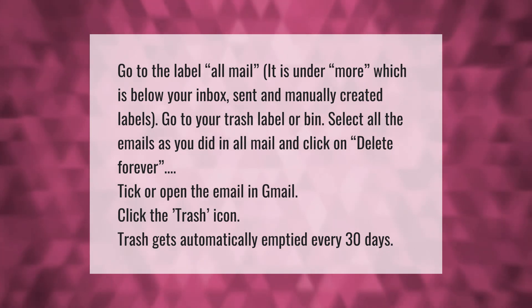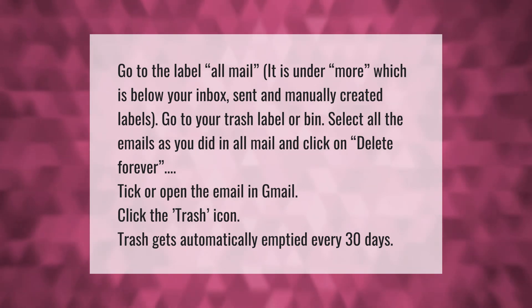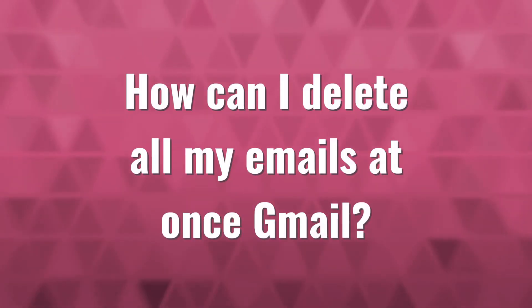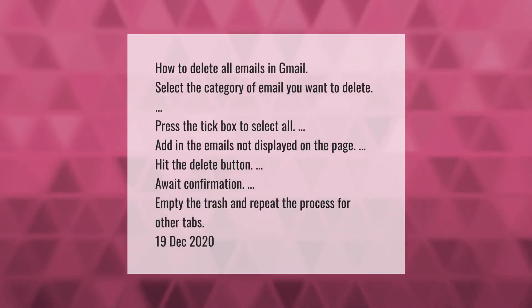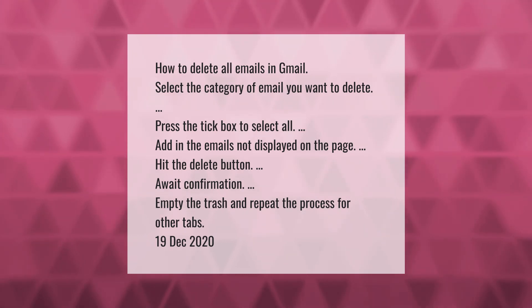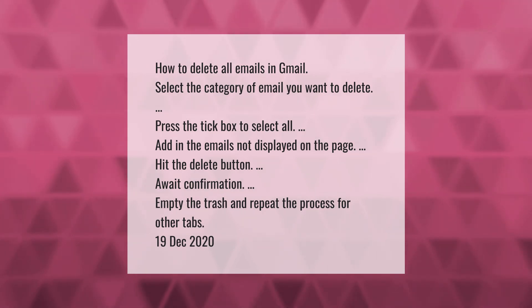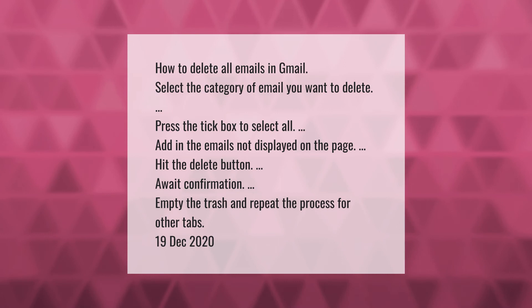Tick or open the email in Gmail and click the trash icon. Trash gets automatically emptied every 30 days. To delete all emails in Gmail, select the category of email you want to delete, press the tick box to select all, add in the emails not displayed on the page, hit the delete button, await confirmation, empty the trash, and repeat the process for other tabs.